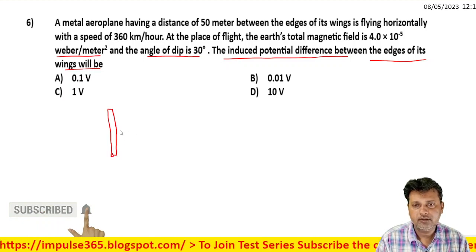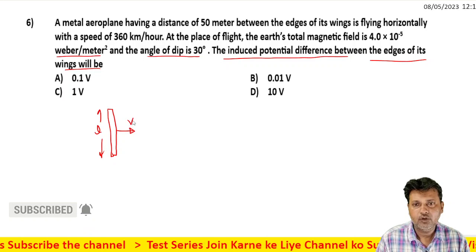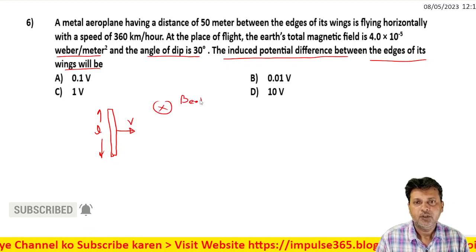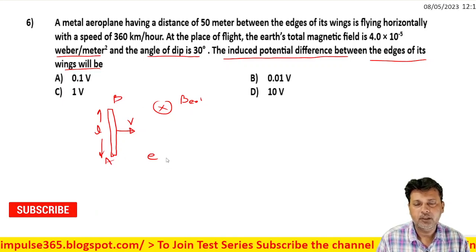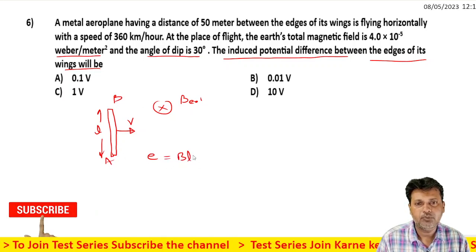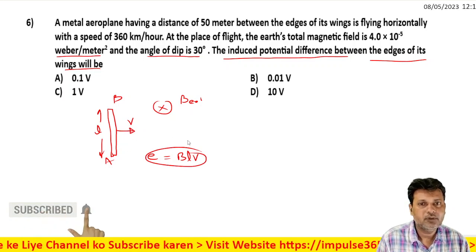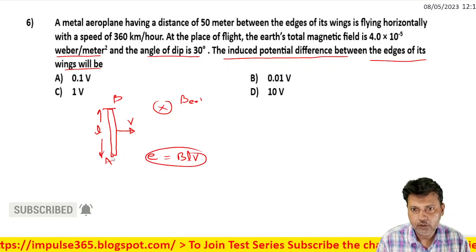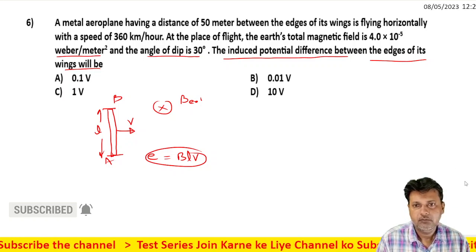In the external magnetic field, EMF will be induced between the two terminals. The EMF induced can be calculated using E = BLV, where B is magnetic field, L is length, and V is velocity. The airplane's wings have a length of 50 meters, and the speed is 360 kilometers per hour.